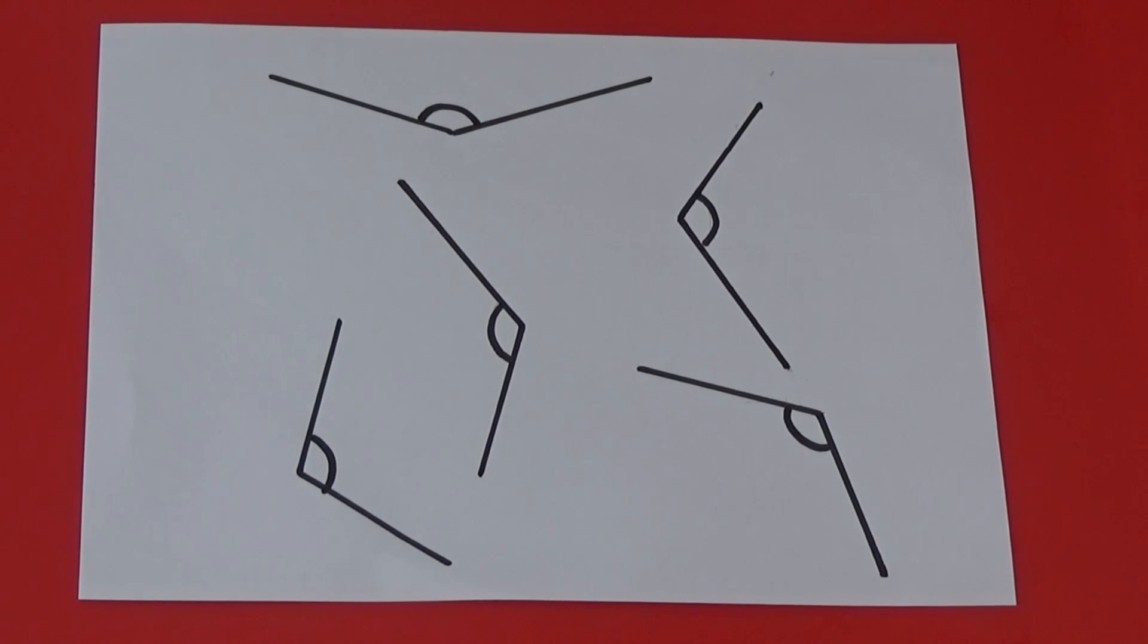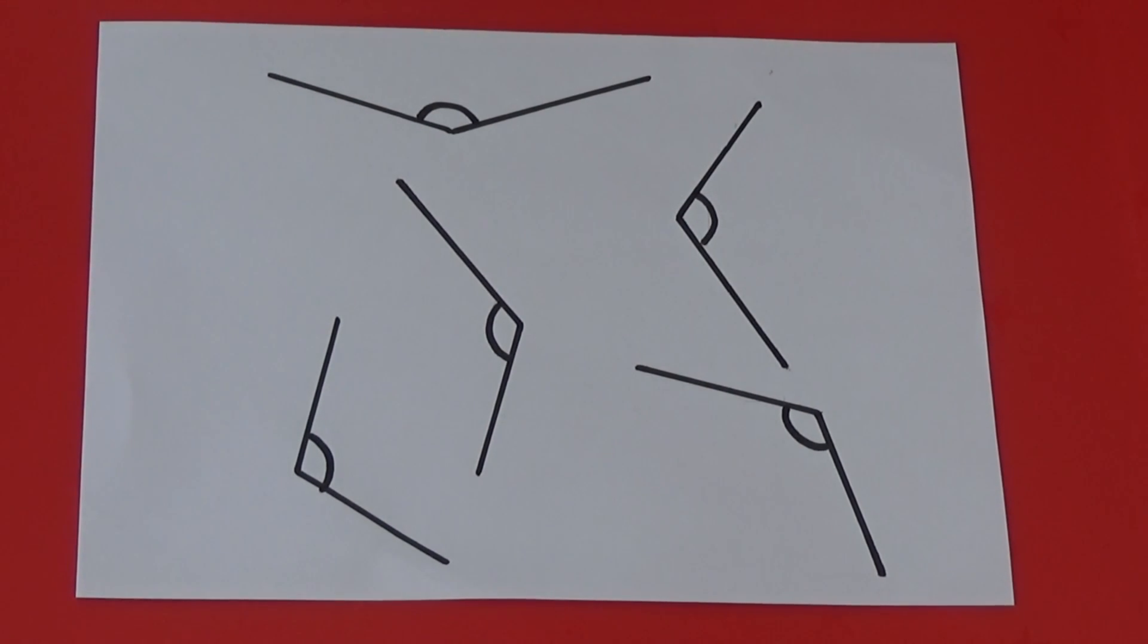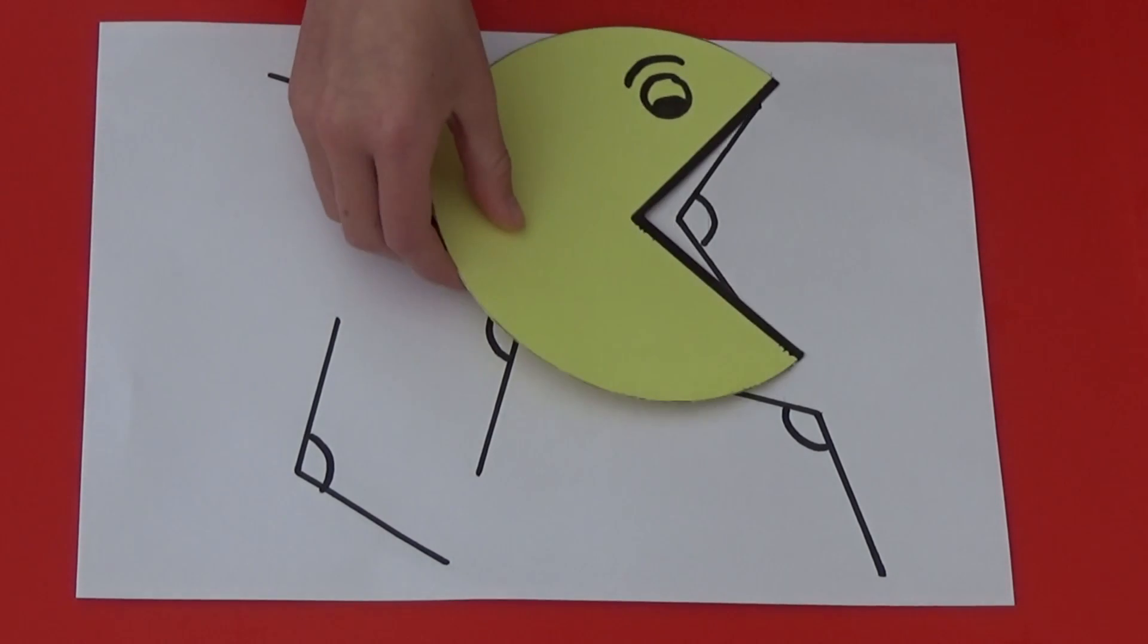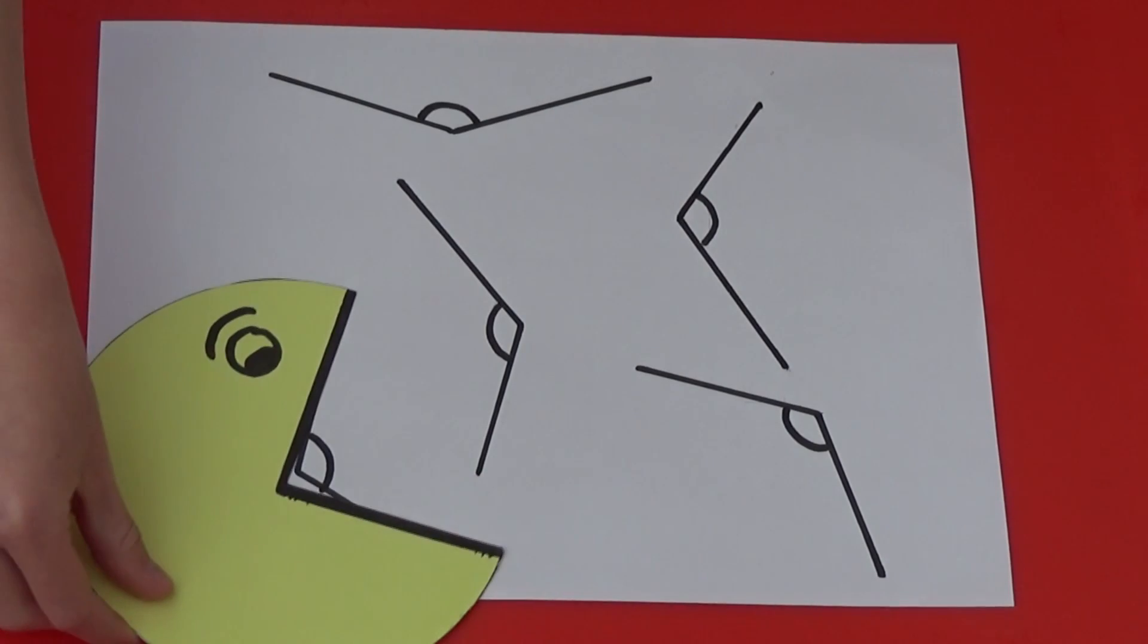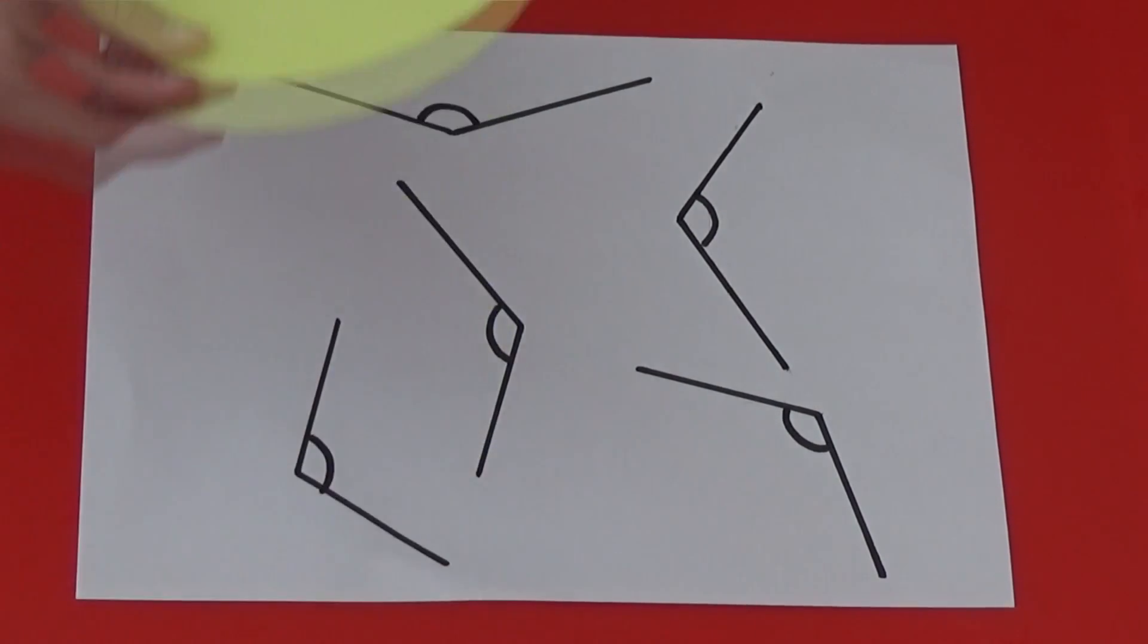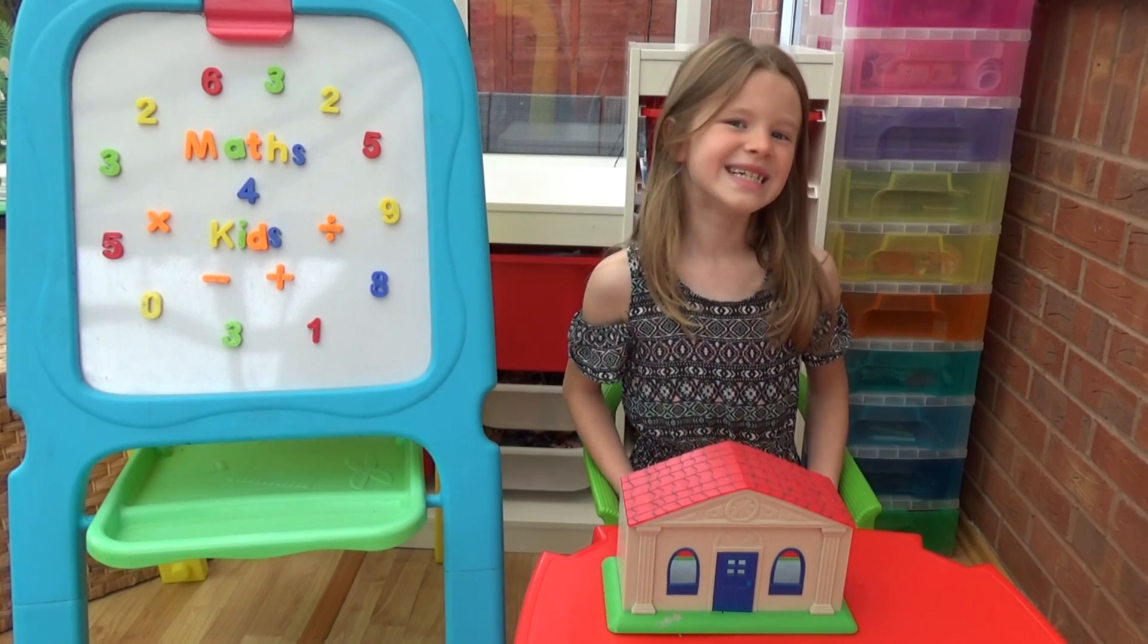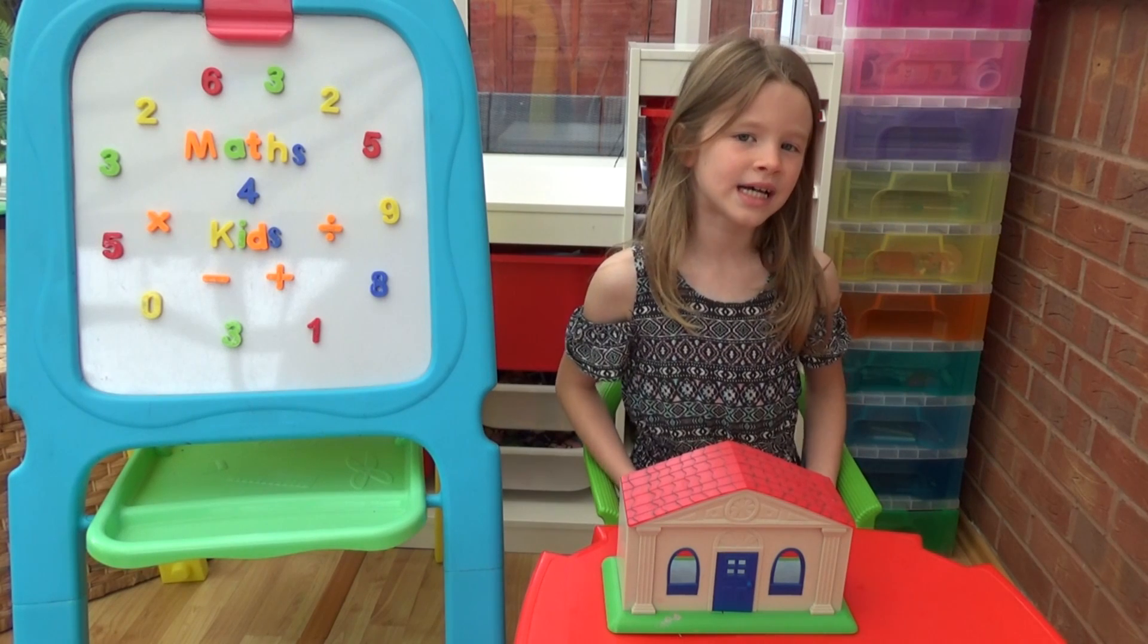We're now going to look at obtuse angles. Obtuse angles are angles which are bigger than a right angle but smaller than a straight line. If we aren't sure if an angle is obtuse we can again check them with our right angle tester. We can also use it to check objects around us.